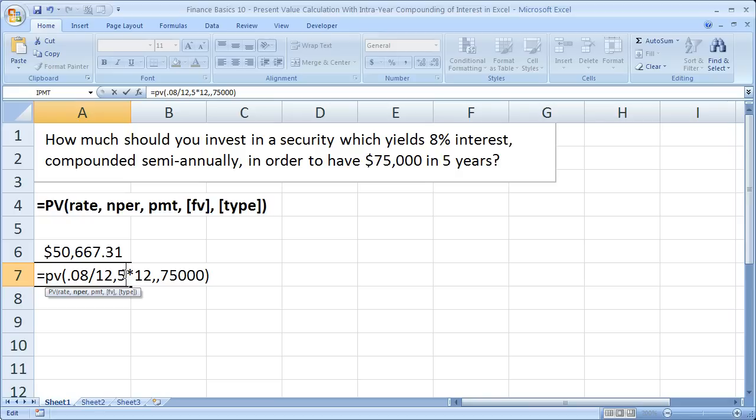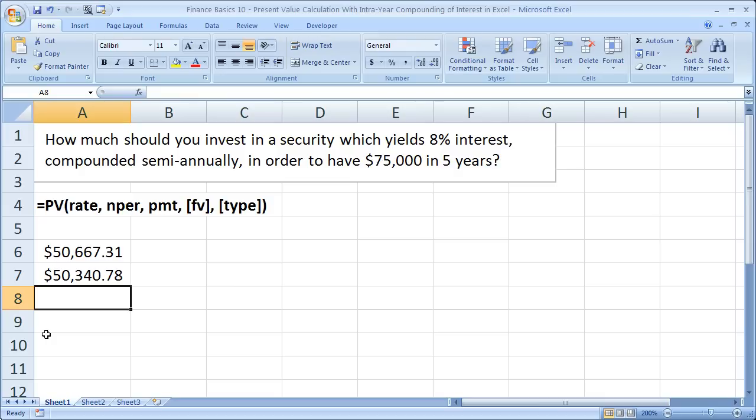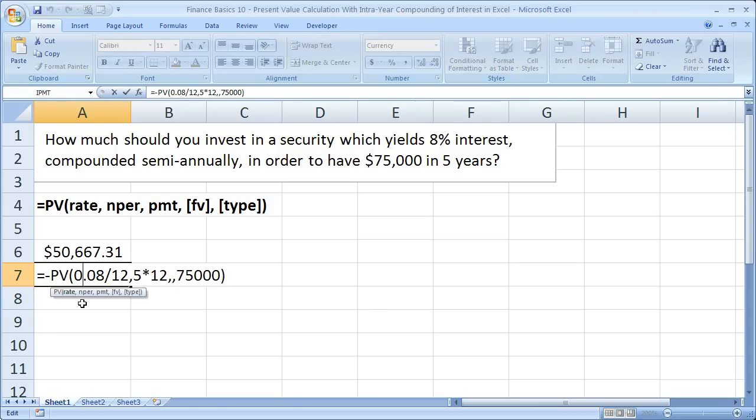So, let's see how much you would get in this case or how much you need to invest. Put a negative sign up here. A little bit less, you know, about $327 less. But, either way, that's how you can get the present value when there is intra-year compounding.